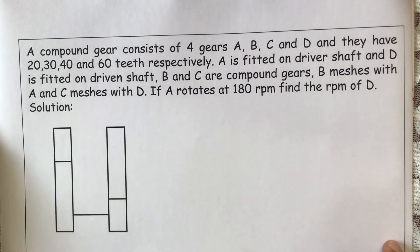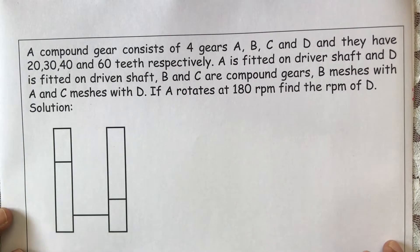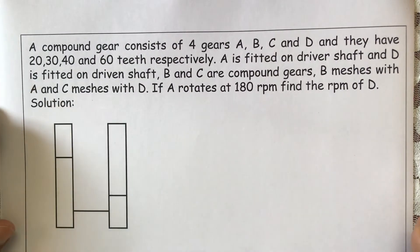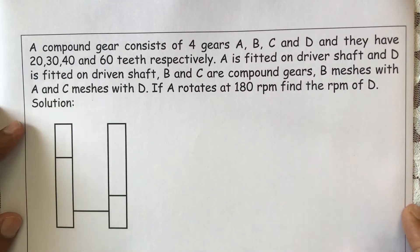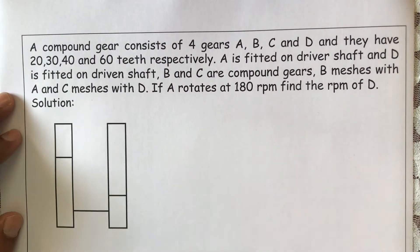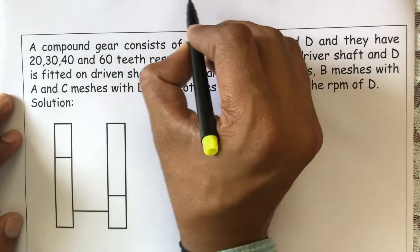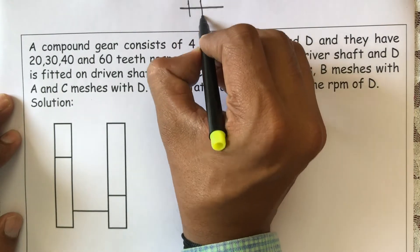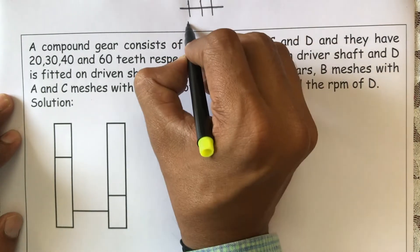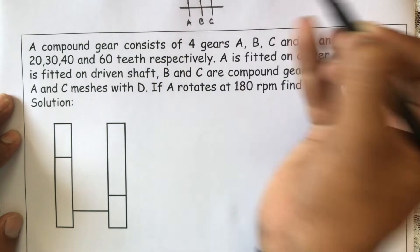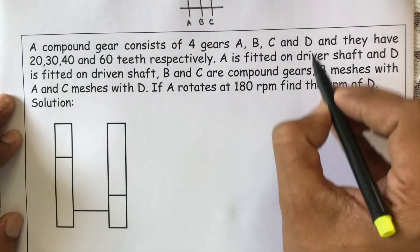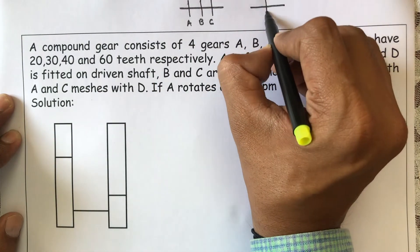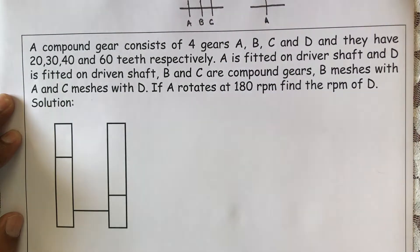Let us solve a numerical on compound gear train. What is the difference between a simple gear train and a compound gear train? In a compound gear train, a number of gears are mounted on a single shaft — A, B, or C. But in a simple gear train, only one gear is mounted on the shaft.